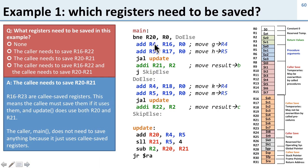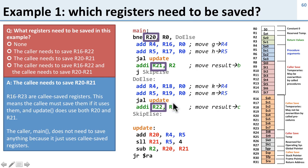Registers 4, 5, and 2 are the return value and the procedure arguments, so we don't need to save those because they're the ones that go back and forth between the caller and the callee. Now let's take a look at registers 20, 21, and 22. These are used by the caller, but these are callee-saved registers.